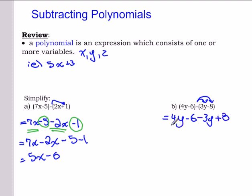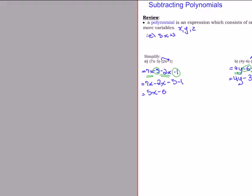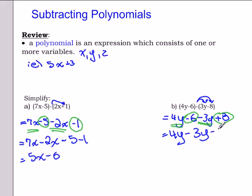If we collect like terms, we have 4y and negative 3y, so we can write these together: 4y minus 3y. We also have negative 6 plus 8, which we can write together: minus 6 plus 8.